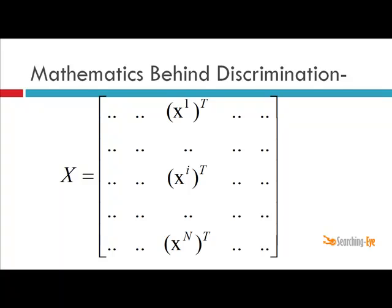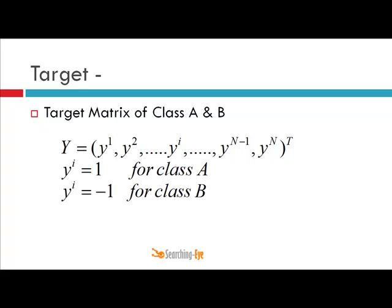So there is the mathematics behind the least square discrimination. Your X is, as we already discussed in first seven lectures, this is your matrix of your input vectors. This is your target vector.